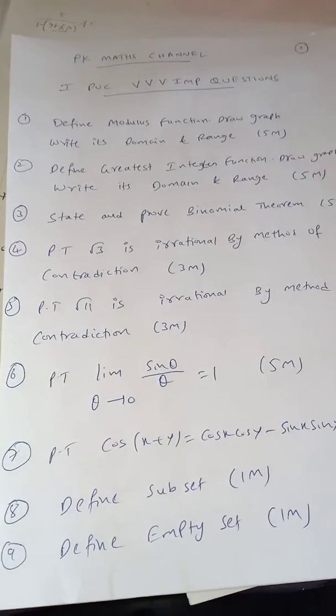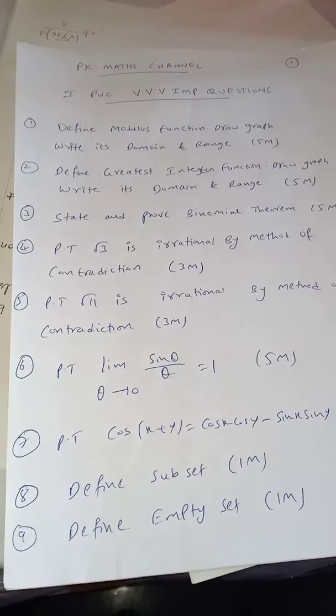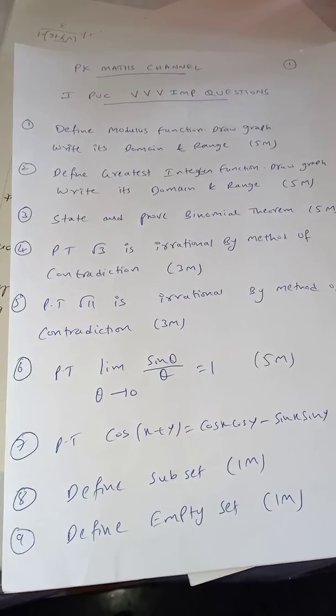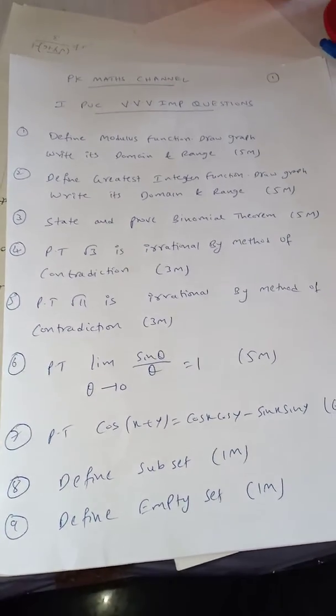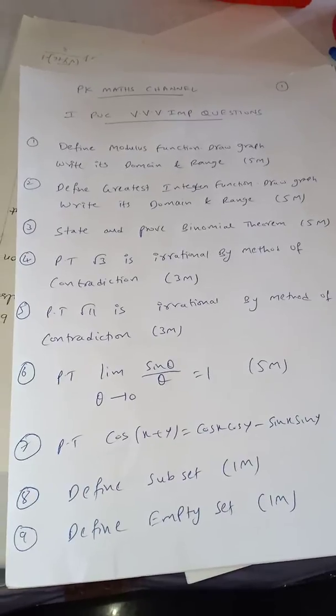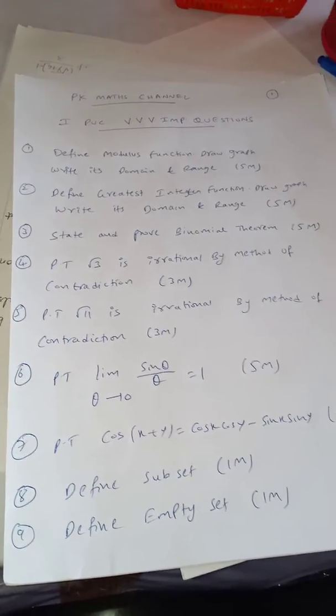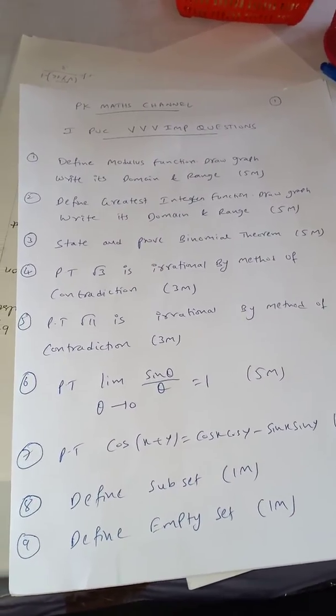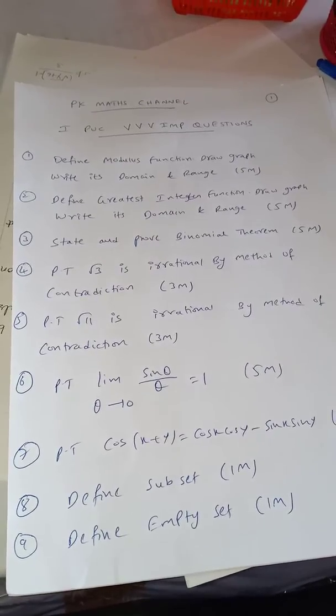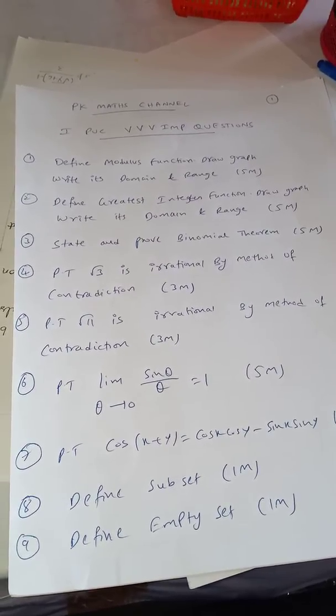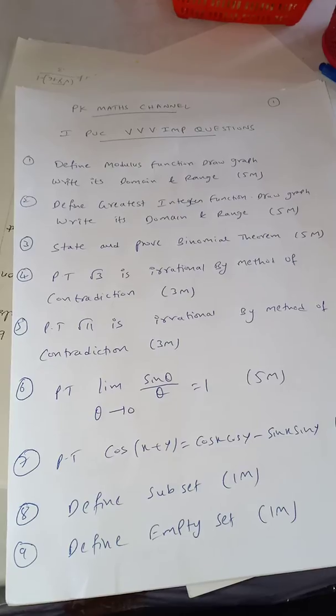Seventh question, prove that cos of x plus y is equal to cos x cos y minus sin x sin y. It is a 6 mark question. We have the last 10 mark question in that they will ask this 6 mark question. Question number 8, define subset. It is a 1 mark question or they can ask define empty set, also 1 mark.